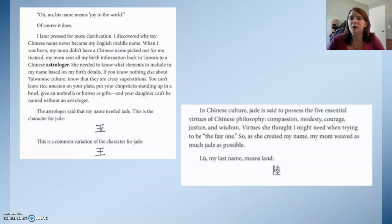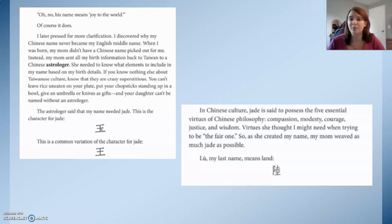I later pressed for more clarification and discovered why my Chinese name never became my English middle name. When I was born, my mom didn't have a Chinese name picked out for me. Instead, she sent all of my birth information back to Taiwan to a Chinese astrologer — she needed to know what elements to include in my name based on my birth details. If you know nothing else about Taiwanese culture, know that they are crazy superstitious. You can't leave rice uneaten, put chopsticks standing up in a bowl, give an umbrella or knives as gifts, and your daughter can't be named without an astrologer.